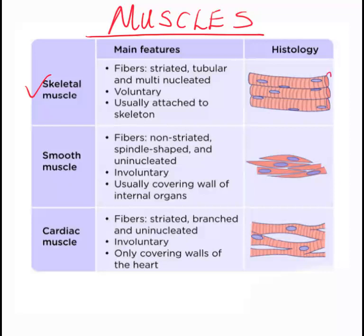Next are smooth muscles. They are also fibres but they are not striated. They are spindle-like — you can see their shapes. They are uninucleated, meaning they don't have many nuclei.